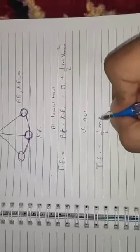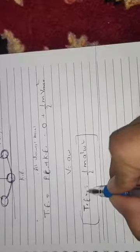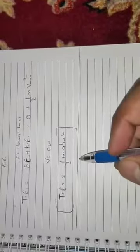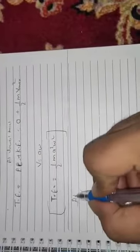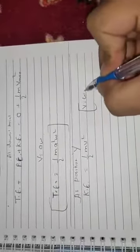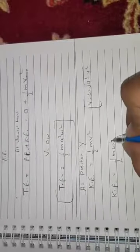The total energy of the oscillator is E = ½ma²ω². To find kinetic energy at any position y: KE = ½mv². Using v = ω√(a² - y²), we get kinetic energy at position y: KE = ½mω²(a² - y²).